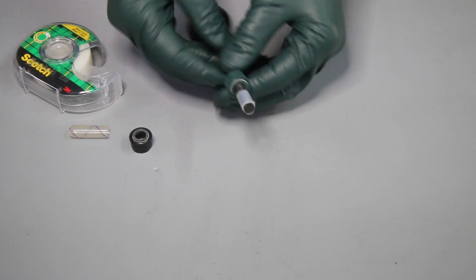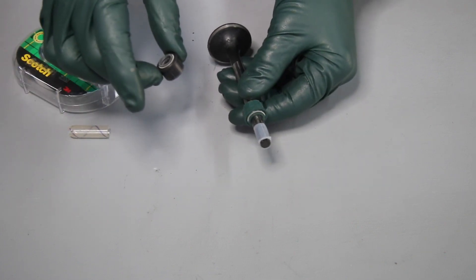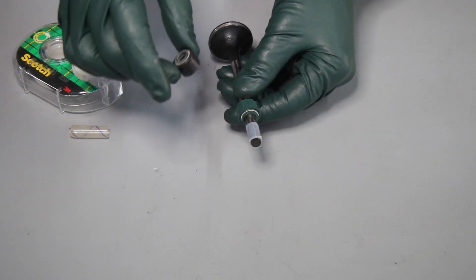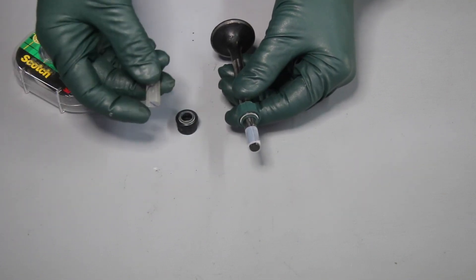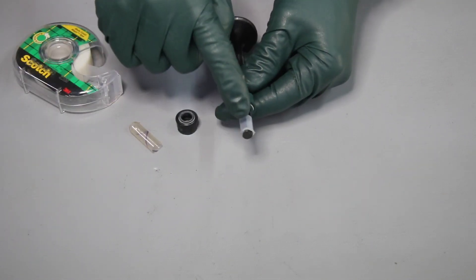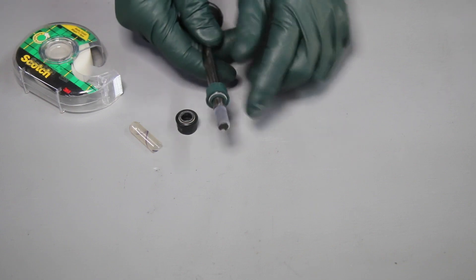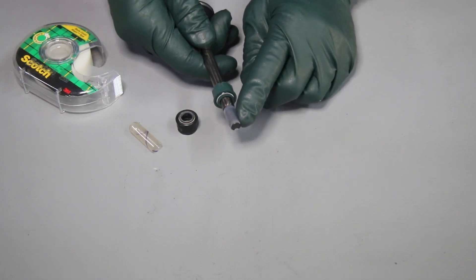So if you end up getting a kit like this or you have any other engine that does not have any protectors included with the valve stem seals, then I highly recommend you use this method here to protect those seals.